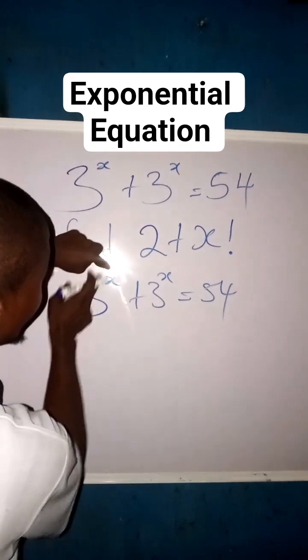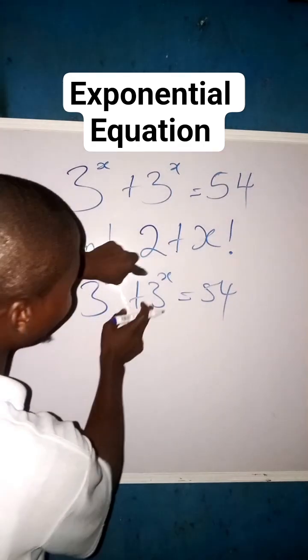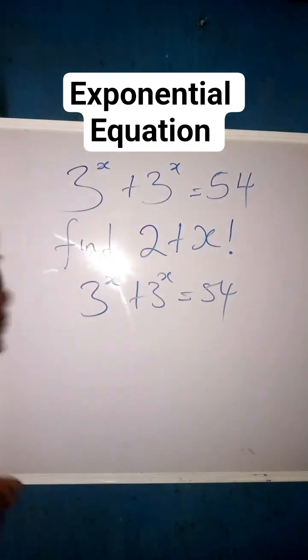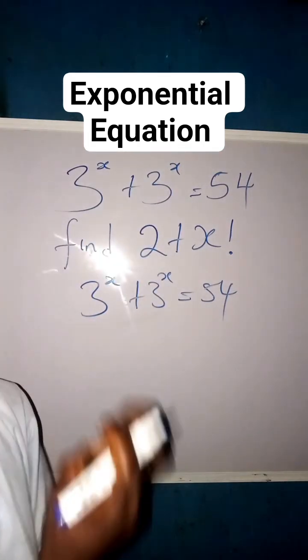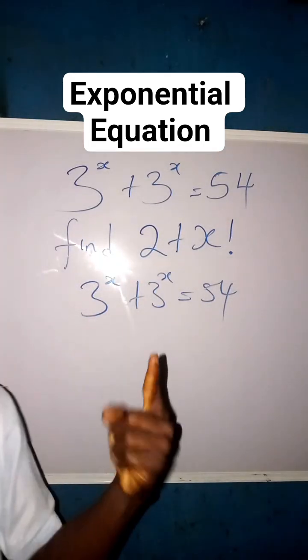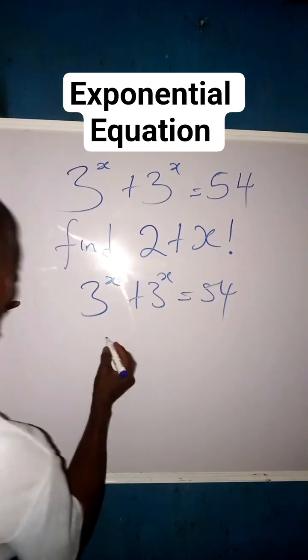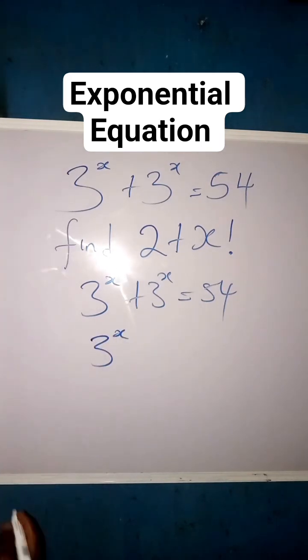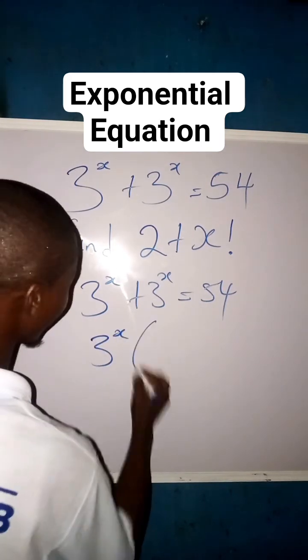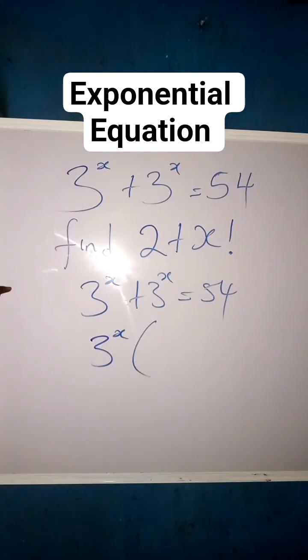We can see that we have 3 to the power of x here and 3 to the power of x here. So we want to factor out one 3 to the power of x, putting 3 to the power of x outside because it is common.